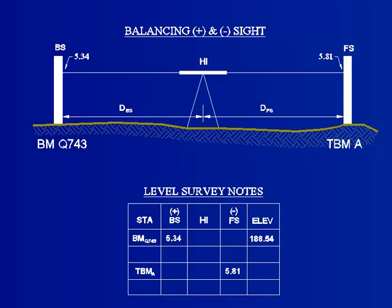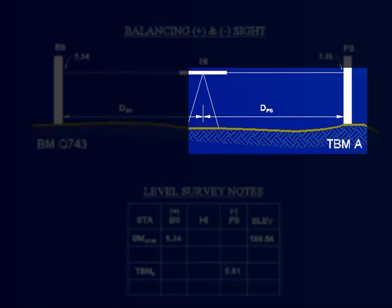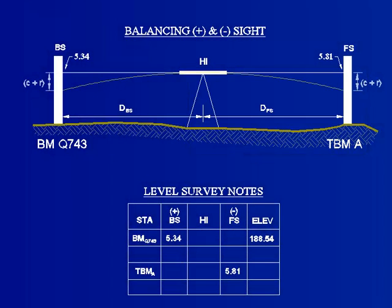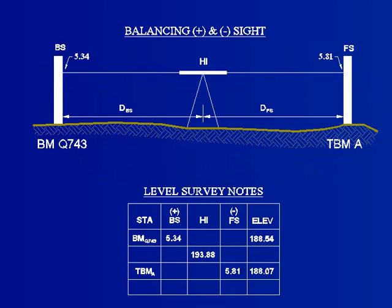Regardless of the height of the instrument or rods at either location, if the distance between the instrument and BMQ743 is equal to the distance between the instrument and TBMA, then the correction for curvature and refraction for the two readings will cancel one another out and an accurate elevation can be found for TBMA. Computing adjustments for curvature and refraction can be eliminated by the way the survey is executed.